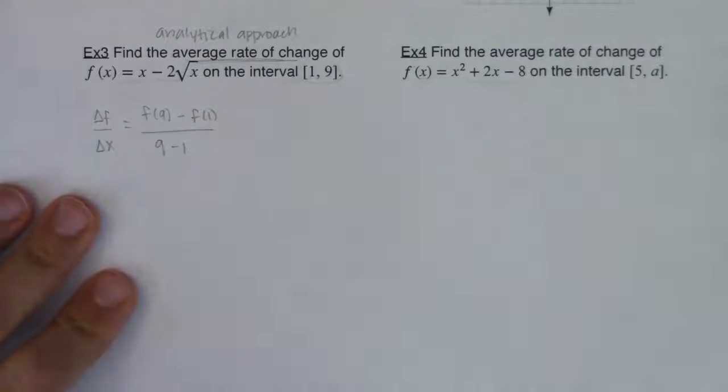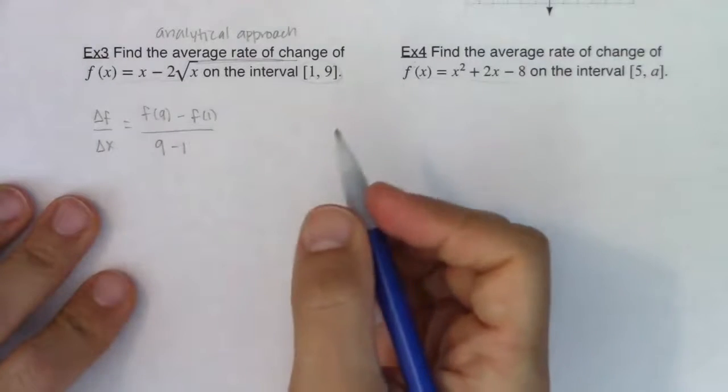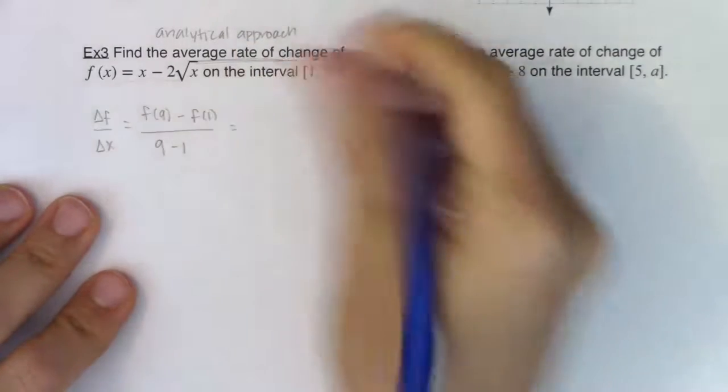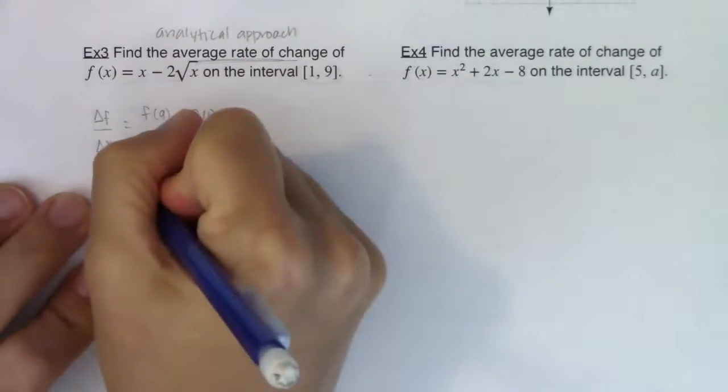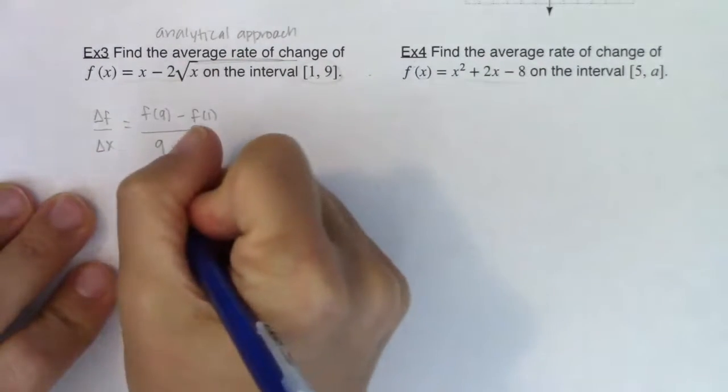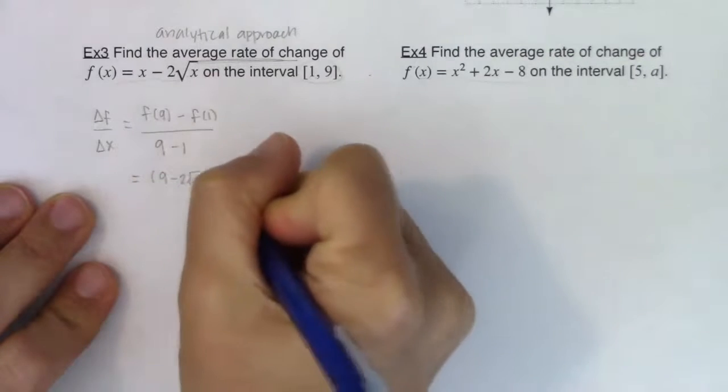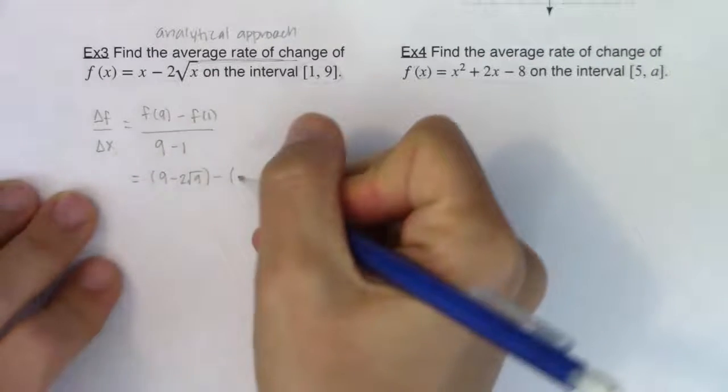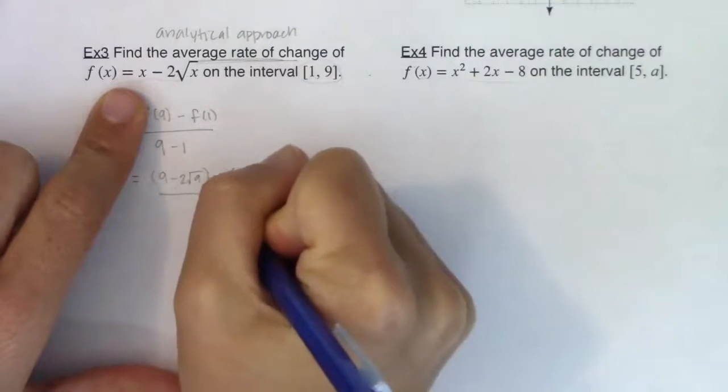All right, so let's see what we have here. If I want f of 9, I need to plug 9 into my function and see what I get back out. So I'm actually just going to go down to the next line and do this. So we are going to have, it looks like up here, 9 minus 2 root 9, and I need to subtract out f of 1. That will be 1 minus 2 root 1 in ratio to 8.